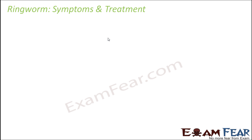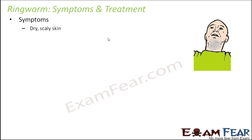The symptoms of ringworm include dry, scaly skin. Specific areas are more prone to this infection, such as the area around the chin, where the skin appears dry and scaly, as if the skin is coming off the surface of the body. It also gives you intense itching — you feel like itching it all the time, but the more you itch, the worse it becomes.